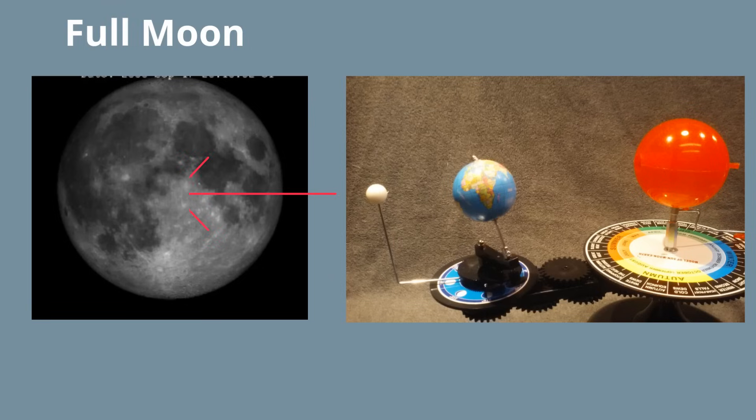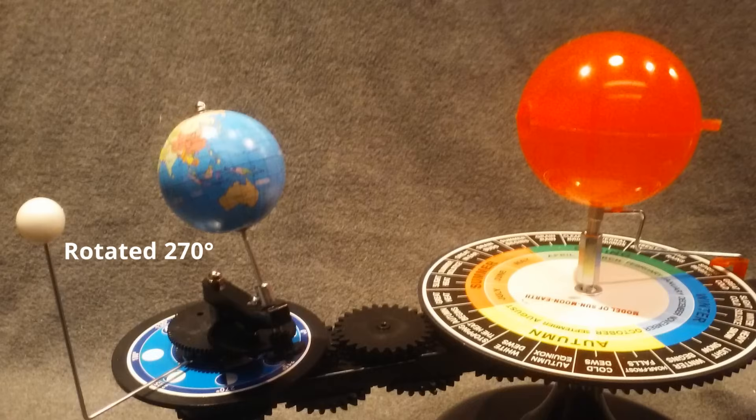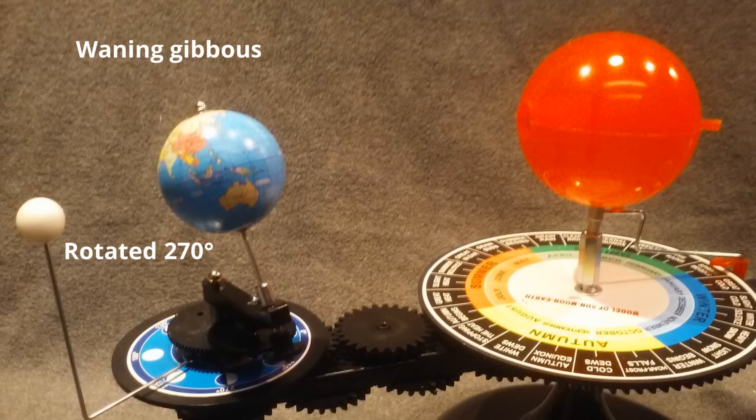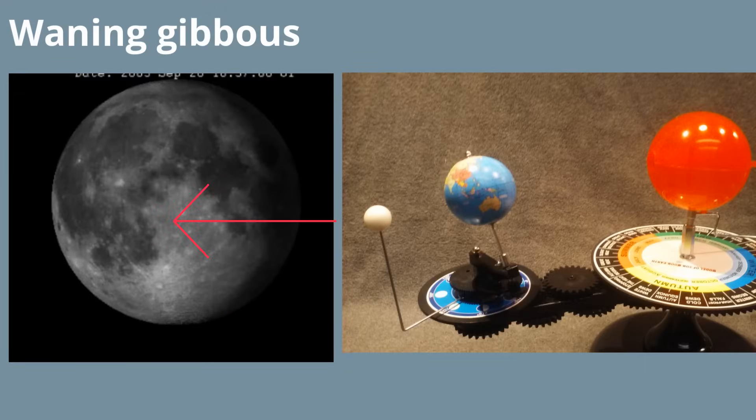After another 3.5 days, the moon is now at waning gibbous. Here's the alignment. Waning means the light is getting smaller. And here's what it looks like from Earth. Again, remember, the shadow moves from right to left.